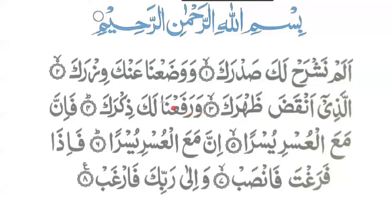Next ayat: Wa rafa'na laka dhikrak. Breaking it down: 'Wa' then 'rafa'na' — wa, ra, fa, na. Then 'laka', same 'laka' as before. Then 'dhik' — dhi joins with a kaf sukun — 'dhik', then 'rok'. Full: Wa rafa'na laka dhikrak.